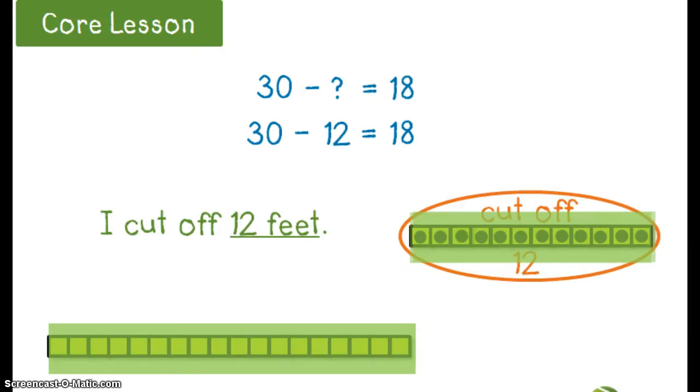I can check my answer by adding 12 plus 18 and that should equal 30 which was the size of the rope to begin with. It's always good to check your answers to make sure that you didn't make a silly math mistake.